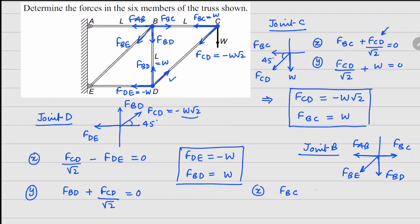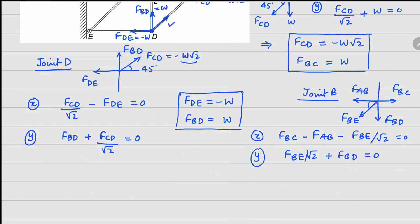Writing the x equation: fbc minus fab minus fbe over square root 2 equals 0, where the square root 2 comes from the 45-degree angle. The y direction gives fbe divided by square root 2 plus fbd equals 0. Since fbd equals w, from the y equation fbe equals minus w√2. Substituting fbc equals w and fbe equals minus w√2 into the x equation gives fab equals 2w.